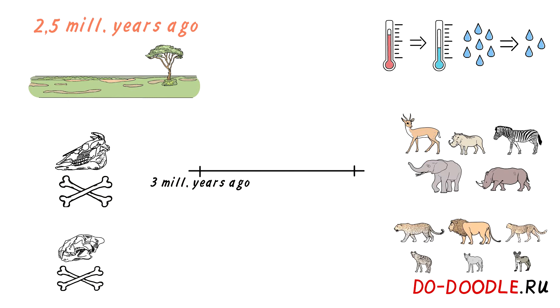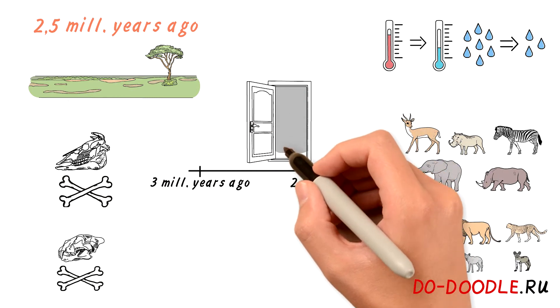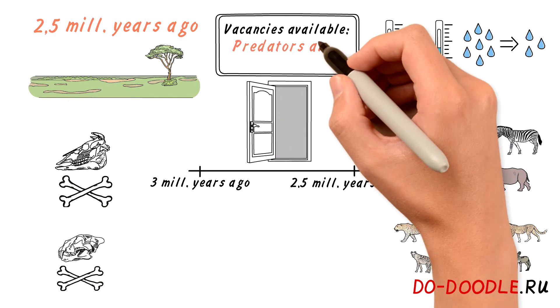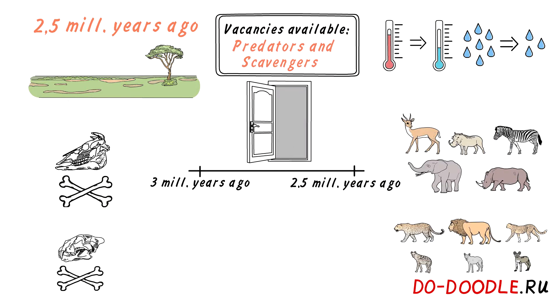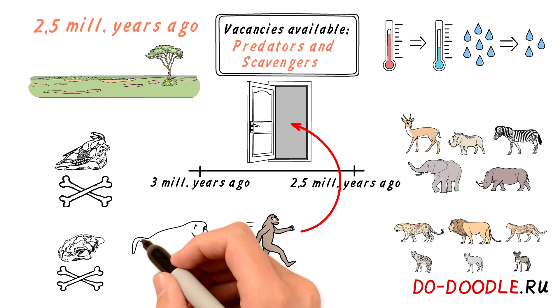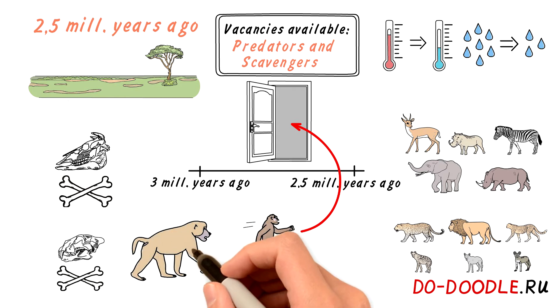For a short period of time, while fauna was changing, the ecological niche of predators and scavengers opened up. The vacancy was immediately taken by early hominids, our ancestors, who used this opportunity while fleeing from deadly competition with giant geladas.